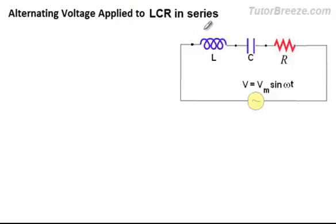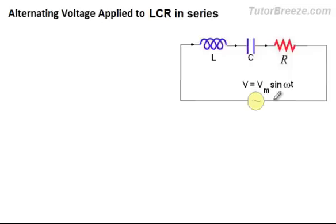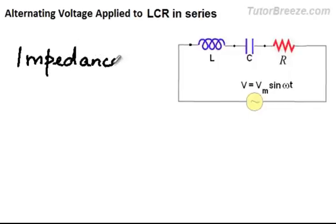A series LCR circuit consists of an inductor, a capacitor, and a resistor all three connected in series — one after the other. This circuit is driven by an external alternating source given by V equals Vm sin omega t. What we want to find in this LCR circuit is the total opposition to the flow of current, which means we want to find the impedance offered by this circuit.